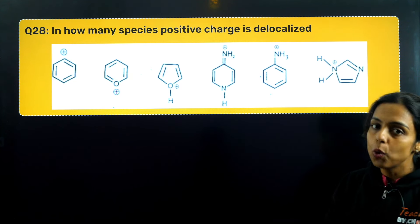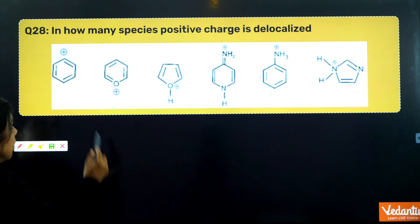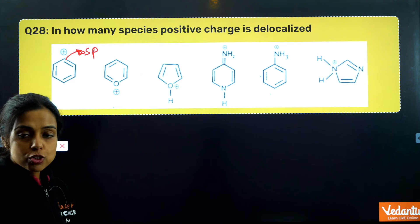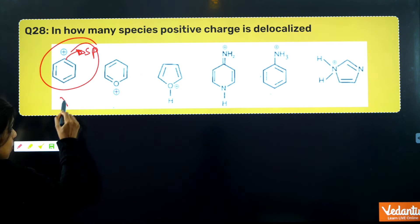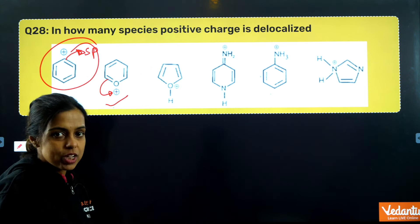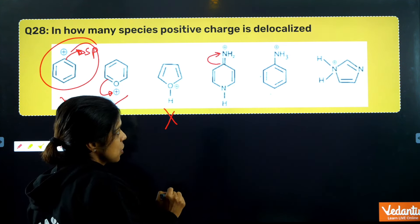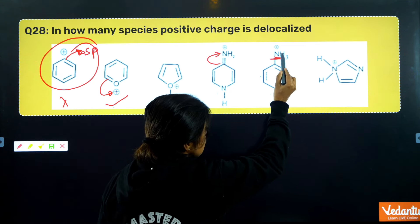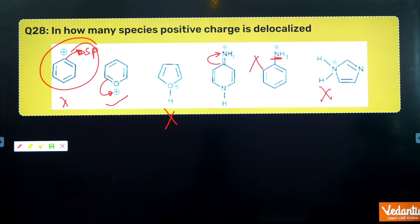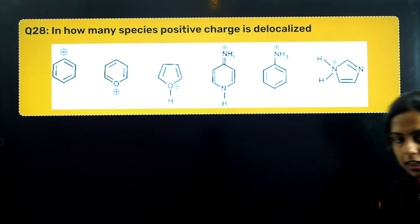Question 28: in how many of the given species can positive charge be delocalized? Phenyl carbocation — the sp-hybridized carbon's orbital cannot overlap with adjacent orbitals due to symmetry mismatch; charge cannot delocalize. One species can undergo resonance (pi bond can shift, charge delocalizes). One species has all sigma bonds on oxygen with positive charge — sigma bonds cannot break for resonance. Two more species with nitrogen forming all sigma bonds — charge cannot delocalize. Total species where positive charge can be delocalized: 2.